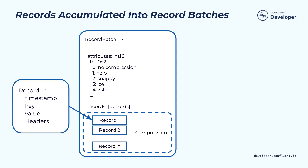Sending each record as itself is not going to be efficient because it has too much overhead. Instead, what a producer library does is to buffer all those records for a particular partition in the in-memory data structure, which we call record batches. Accumulating those data in record batches also allows compression to be done in a more efficient way, because compressing a bunch of records together is much more efficient than compressing them individually.